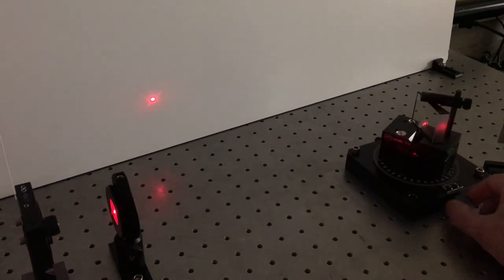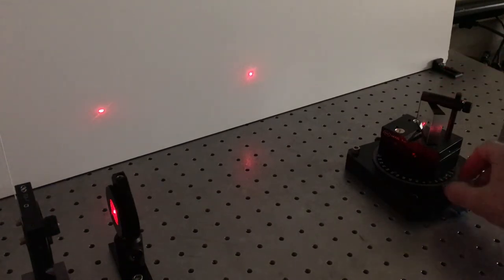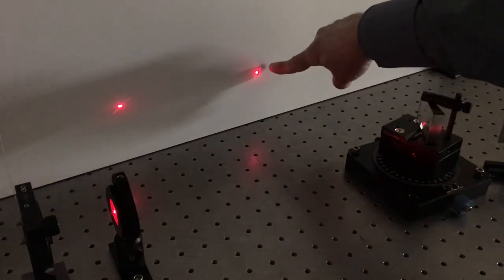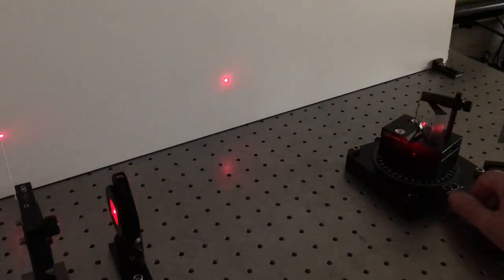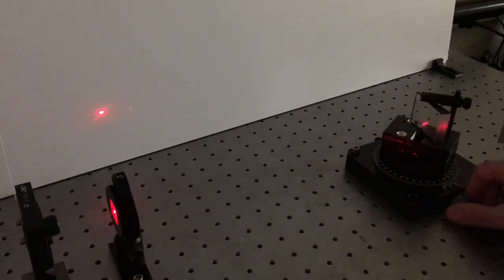And if I rotate it a little further we can see there's a second reflection from the back face. We want to concentrate on this one, the reflection from the front face, and ignore the one off the back face. And what we're interested in determining is, is this reflected light polarized anyway?